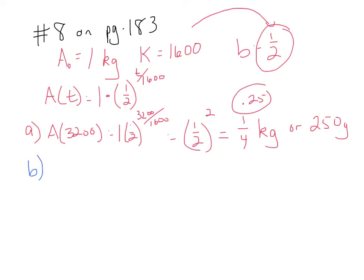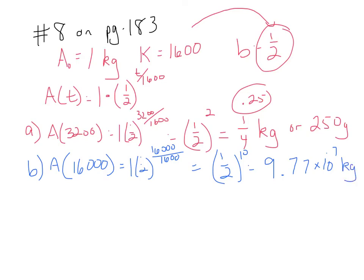B says how much is left after 16,000 years? Well, that'd be 1 times 1 half to the 16,000 over 1600 power. That's 1 half to the tenth power. Very small number. Your calculator is probably going to say 0.000977. That's really 9.77 times 10 to the negative seventh power kilograms or take that times 1,000 to turn it into grams, 0.977 grams.